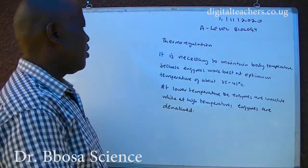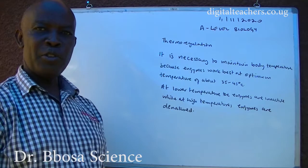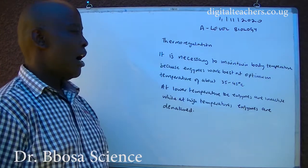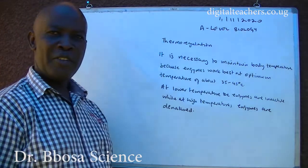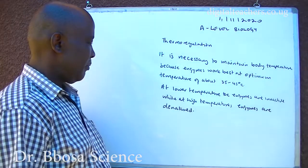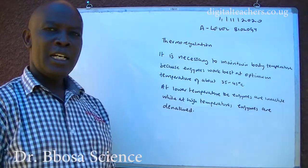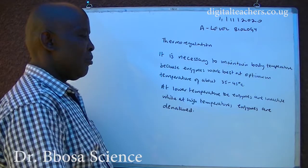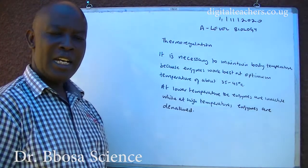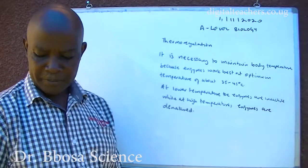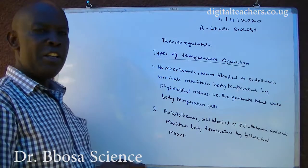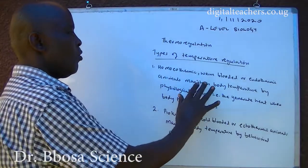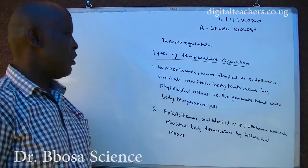It is necessary to maintain body temperature because enzymes work best at optimal temperature, about 35 to 45 degrees. At lower temperatures, enzymes are inactive, while at high temperatures, enzymes are denatured. Types of temperature regulation: homeothermic — all warm-blooded or endothermic animals.